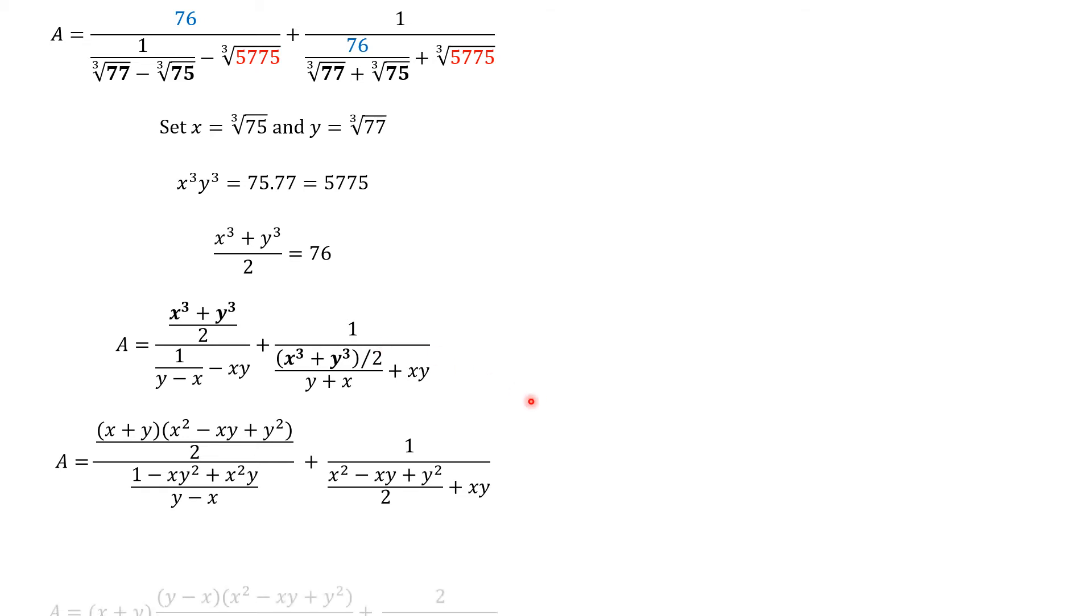We rearrange the terms so we can isolate X plus Y, and put this difference Y minus X here in the numerator. What we want to do now is that we will try to figure out the candidates that are here and here. So, let's start.